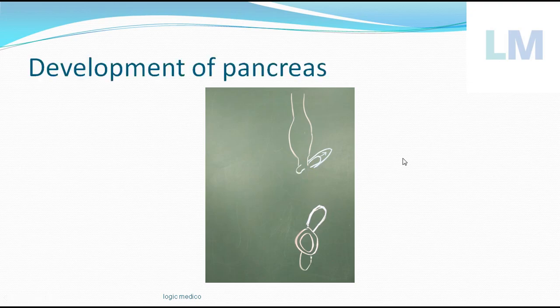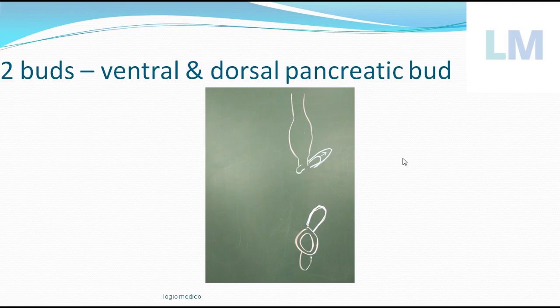The dorsal pancreatic bud is slightly cranial to the ventral pancreatic bud. Both buds start their appearance at the fourth week of intrauterine life. The dorsal pancreatic bud later grows much more rapidly compared to the ventral pancreatic bud.